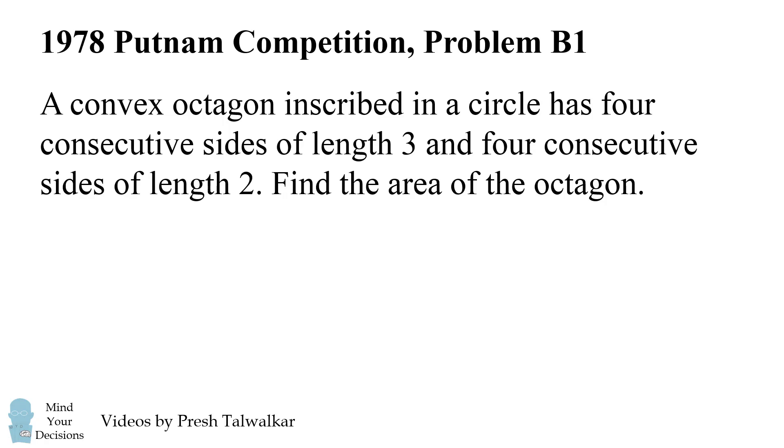In this video, we'll focus on the 1978 Putnam exam, problem B1. A convex octagon inscribed in a circle has four consecutive sides of length 3 and four consecutive sides of length 2. Find the area of the octagon.